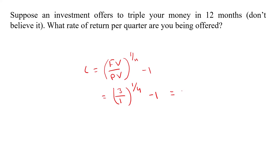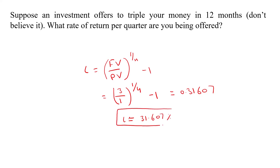The answer is 0.31607, so the interest rate is equal to 31.607%. If we deposit $1 and the interest rate is 31.607% paid quarterly, then our amount will triple in one year.